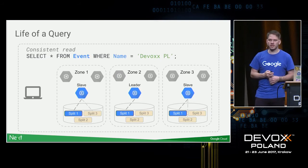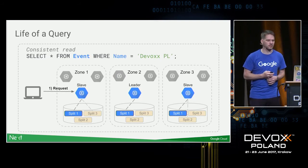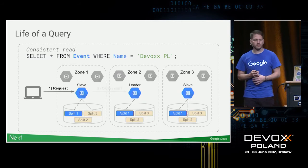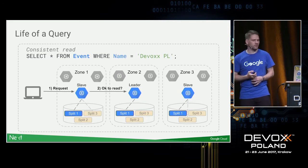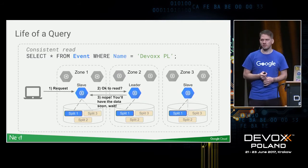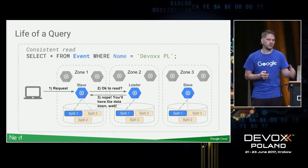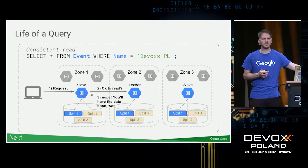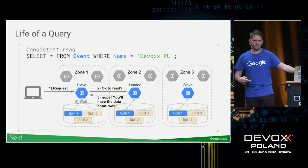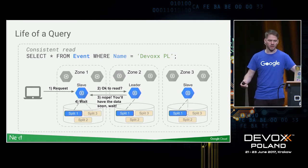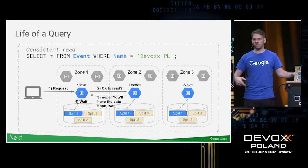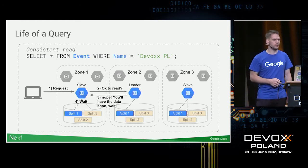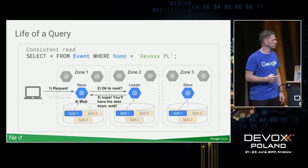What if the follower doesn't have the latest data? The leader responds: 'No, my timestamp is later — please wait.' It sends the timestamp of the latest data, which is most likely already in flight to the replica. The replica waits out that time using TrueTime and then responds with the data.